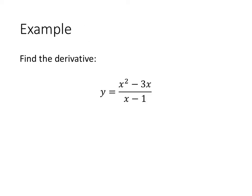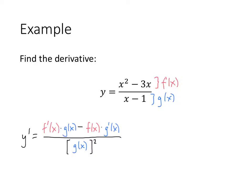So here's an example. Again, to help yourself out when you're starting out, call the top function f of x, and the bottom function g of x, and then simply fill into your quotient rule formula. So here's our quotient rule formula, and now all we have to do is fill in the information.